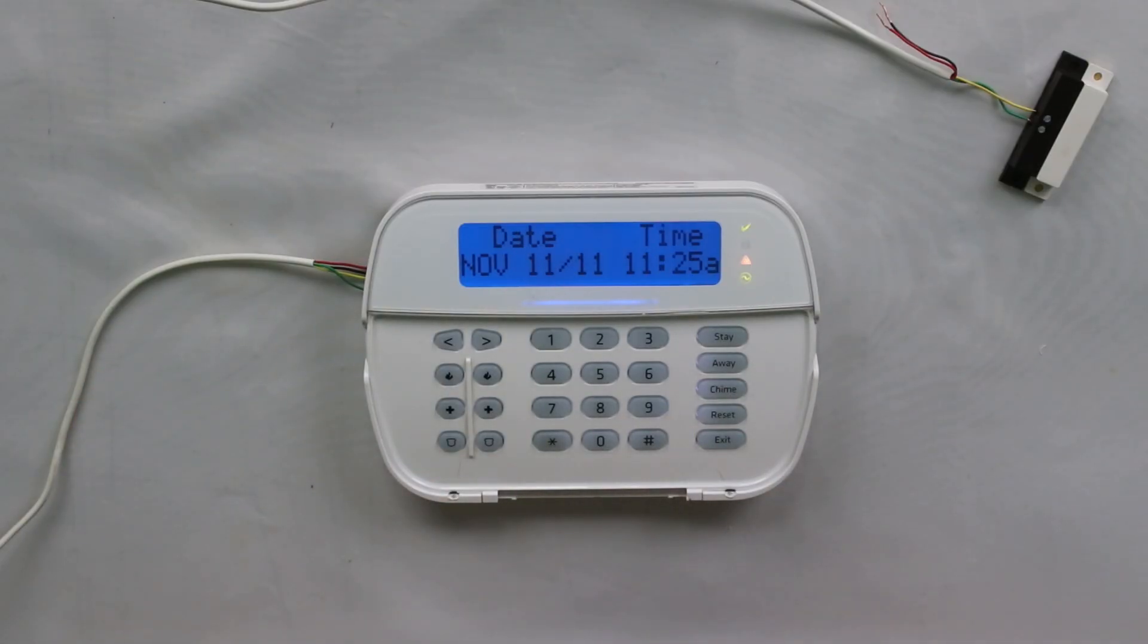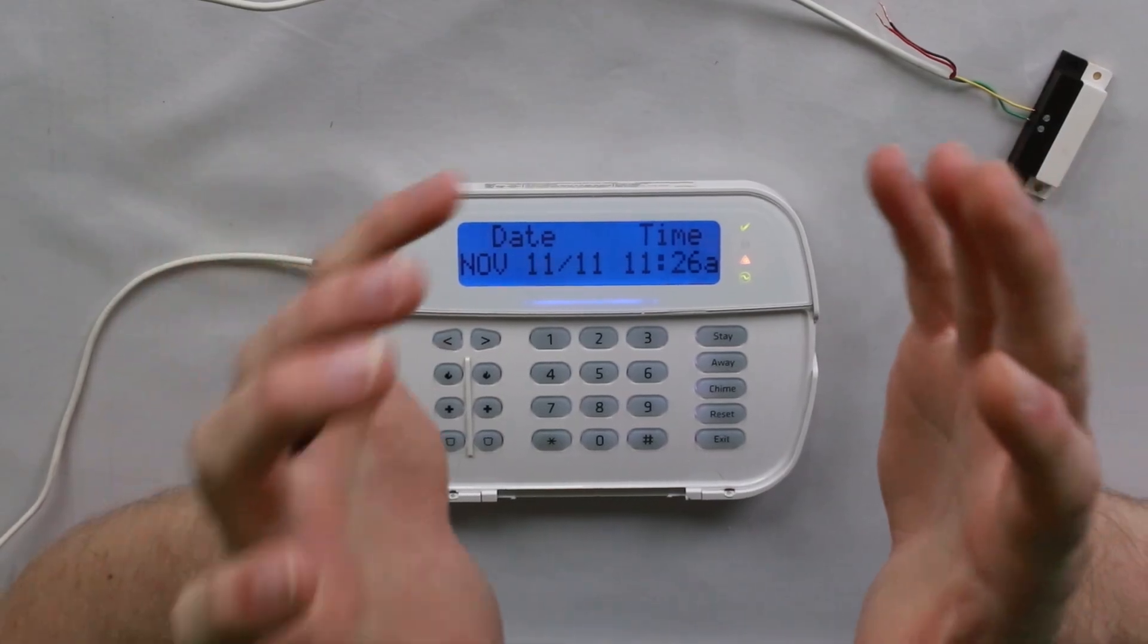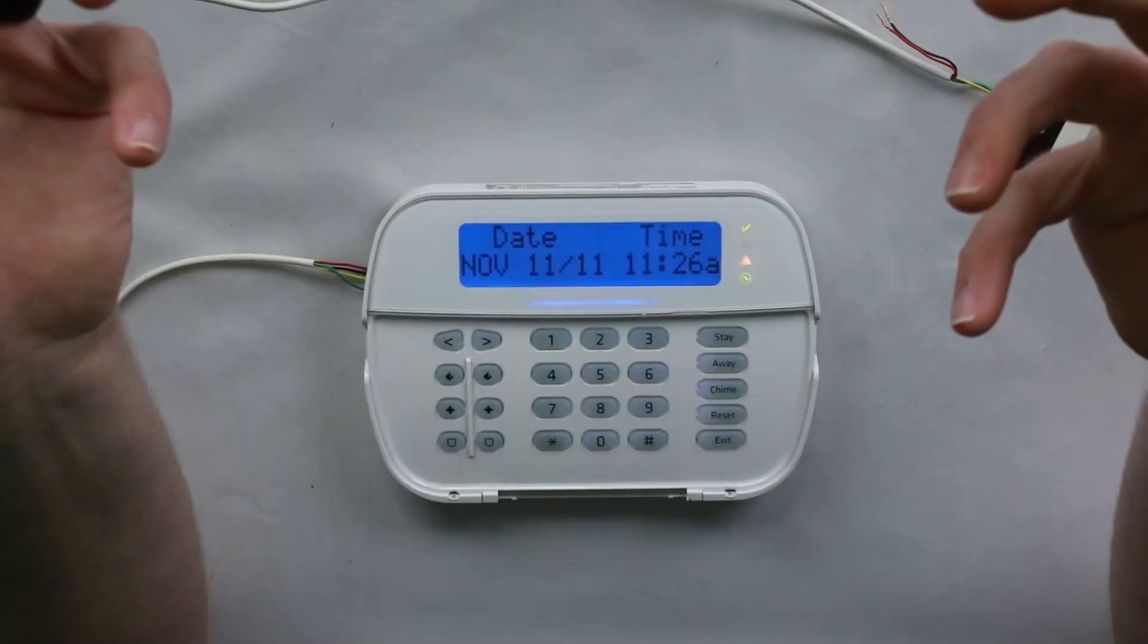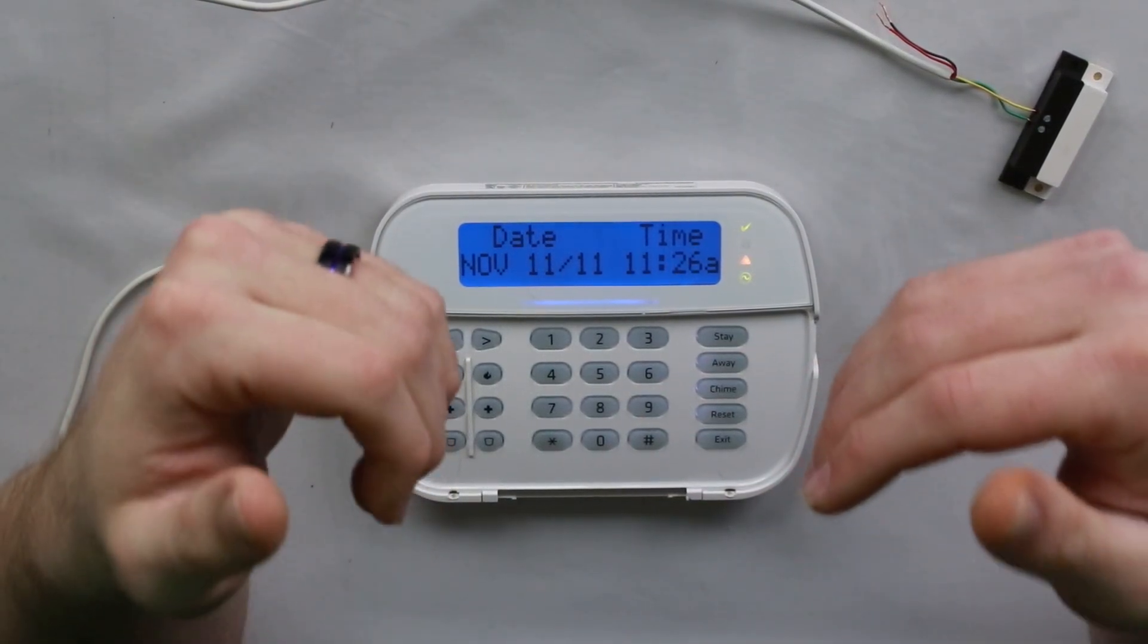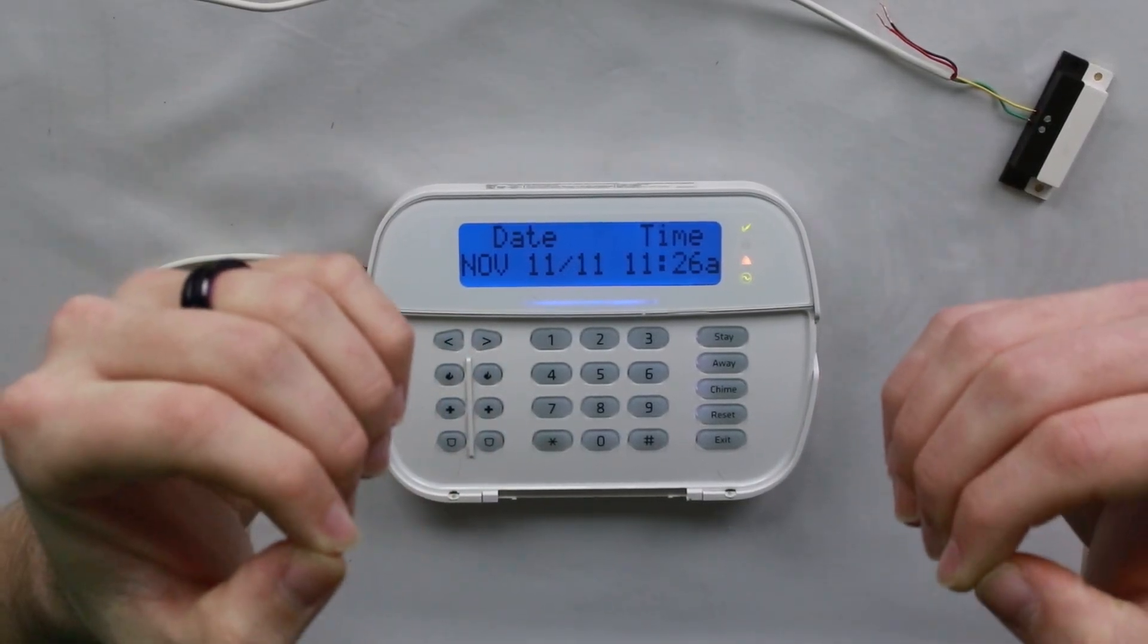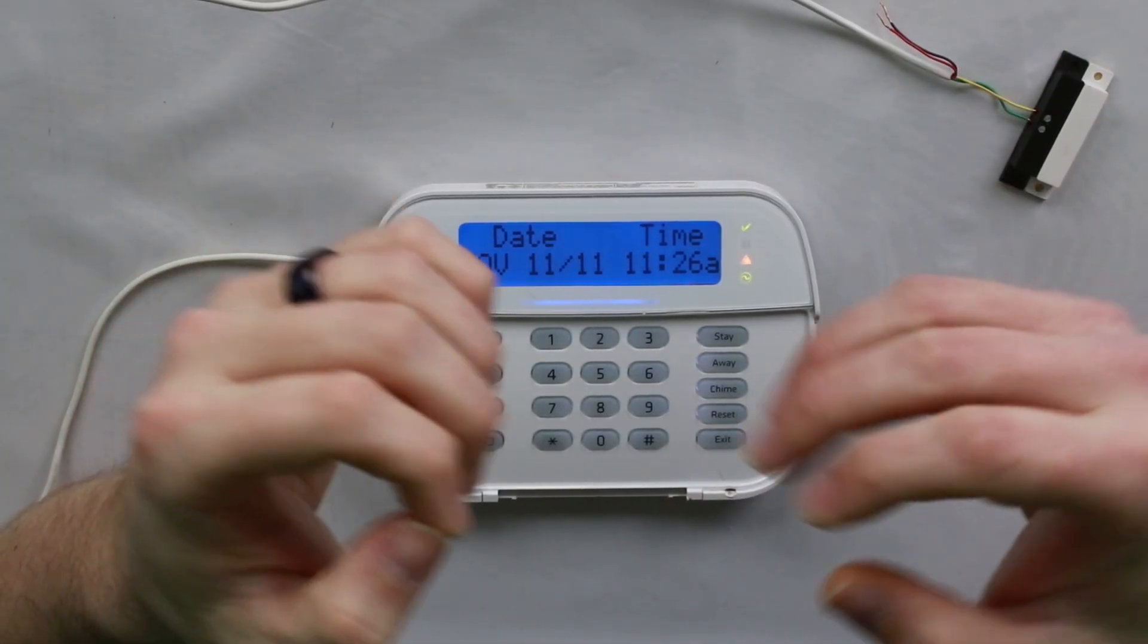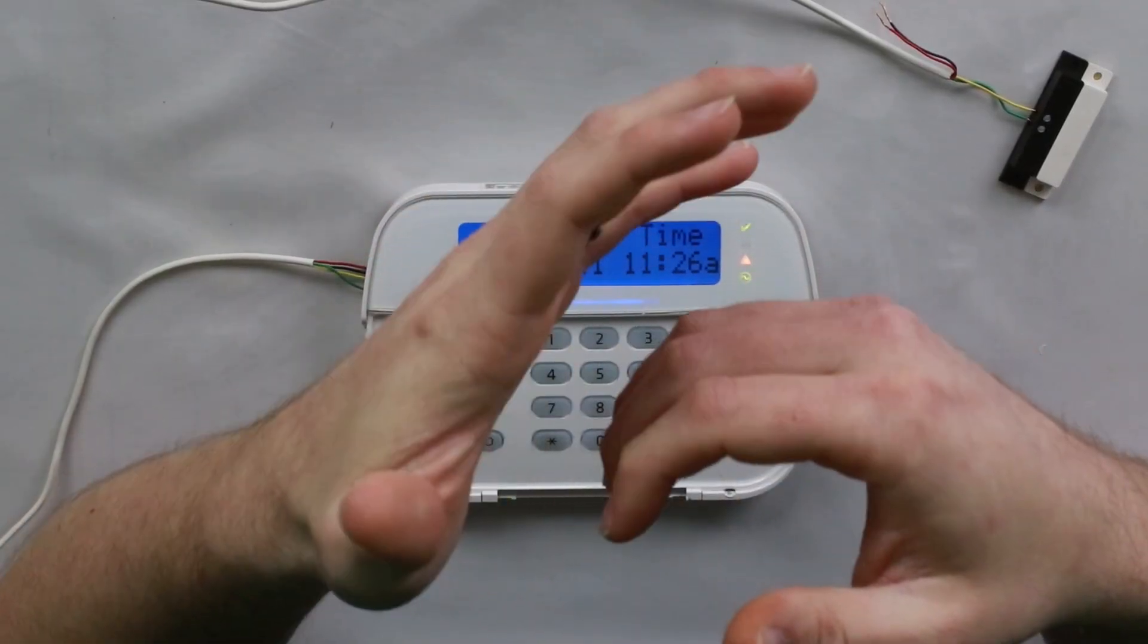The only way to make an FTC clear from a panel on its own is to have your panel successfully send a signal. To do that, essentially, you need to solve whatever is going on with the communicator, phone line, whatever the case may be, and test the system so that it sends out a successful signal. You can, however, temporarily clear the FTC by power cycling the panel. If you do so, just know that if your system still cannot communicate, the FTC will reappear the next time the system tries to send out a signal. So even if you power cycle it, you do still have to troubleshoot and make sure and test whether or not your signals are going to go through.